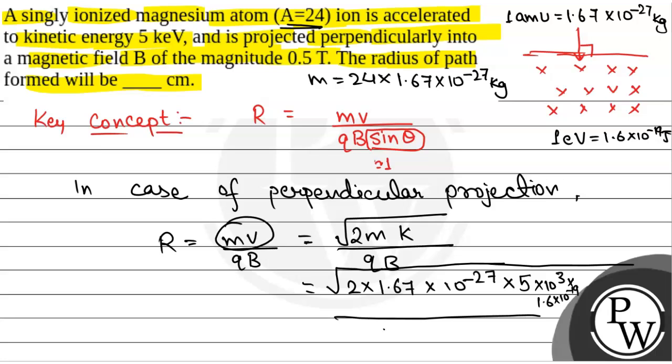Q is charge on an electron because it is singly ionized magnesium atom. So charge is 1 electron. So that will be equal to 1.6 into 10 to the power minus 19, into magnetic field B is 0.5 tesla.